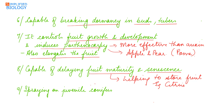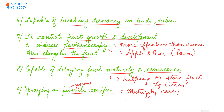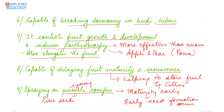Spraying gibberellin on juvenile conifers — young gymnosperms — causes them to become mature early, resulting in early seed formation. For example, pine seeds, that is chilgoza.